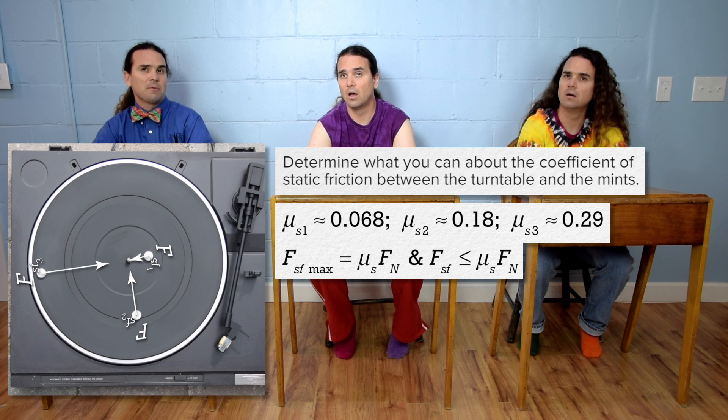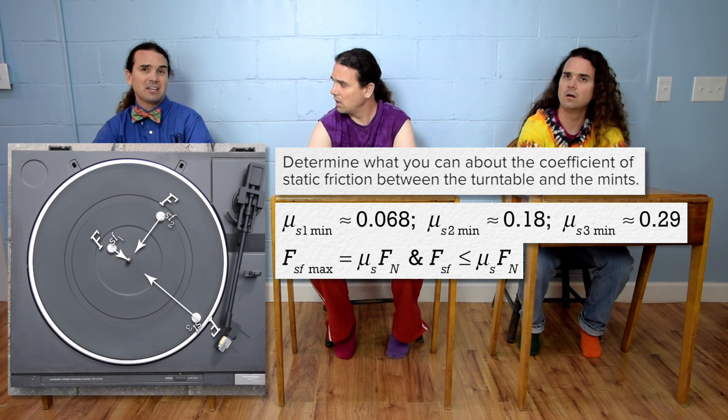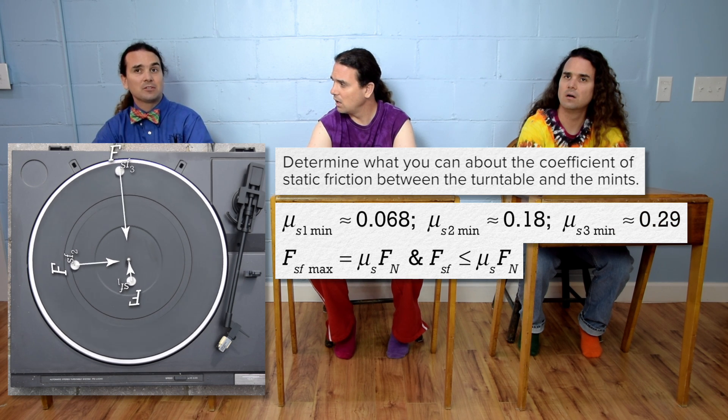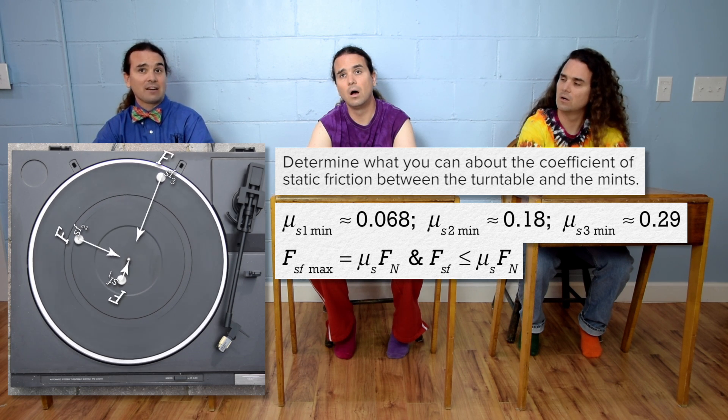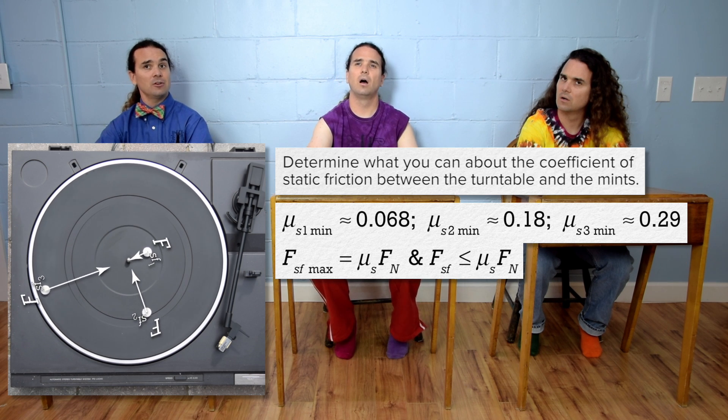So, what we found is the minimum coefficient of static friction necessary to keep each mint on the turntable. And as the radius increases, it takes a larger coefficient of static friction to keep each mint on the turntable.